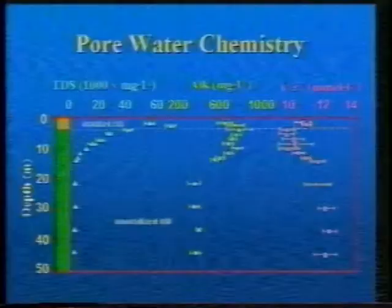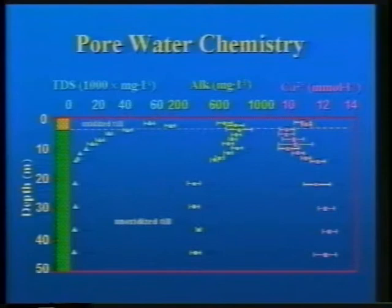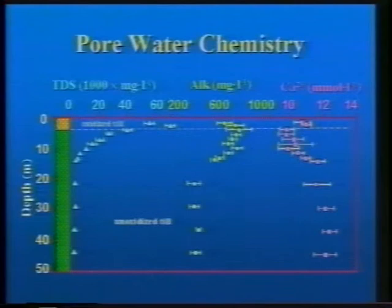How does pore water chemistry look in this system? We'll deal with the major ions. On the left-hand panel, starting with total dissolved solids, you can see that TDS decreases from high concentrations in the oxidized zone — due to high sodium, magnesium, and sulfate water resulting from oxidation during the Holocene — down to background values at depth, reaching background at about 15 meters below ground surface. The same profile shape applies equally to sodium, magnesium, potassium, and sulfate.